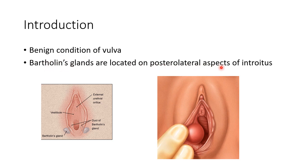This picture shows the normal anatomy of Bartholin's glands. As you can see, they are located on the posterolateral aspects of the introitus. This picture shows a Bartholin cyst. If this Bartholin cyst is infected, it is called a Bartholin's abscess.